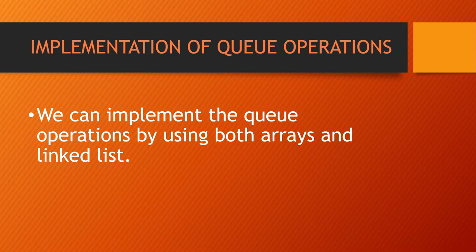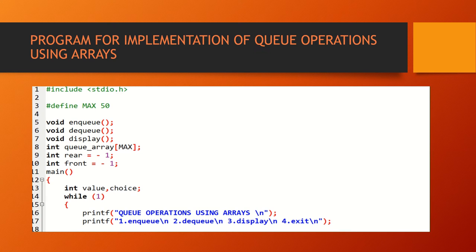Implementation of queue operations. In queues, we can implement the queue operations by using both arrays and linked list. Now let's see the program for implementation of queue operations using arrays. This is the header file. Hash define MAX 50 indicates the size of the queue, and the queue should not extend more than 50 values.